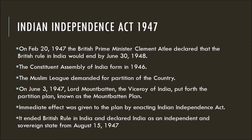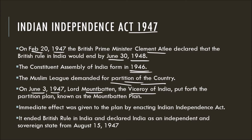Then finally came the Indian Independence Act 1947. On February 20, 1947, British Prime Minister Clement Attlee declared that British rule in India would end by June 30, 1948. A Constituent Assembly was formed to make a constitution for a free India in the year 1946. On the other hand, the Muslim League was demanding the partition of the country. On 3rd June 1947, Lord Mountbatten, the Viceroy of India, put forth the partition plan known as the Mountbatten Plan. Immediate effect was given to the plan by enacting the Indian Independence Act.